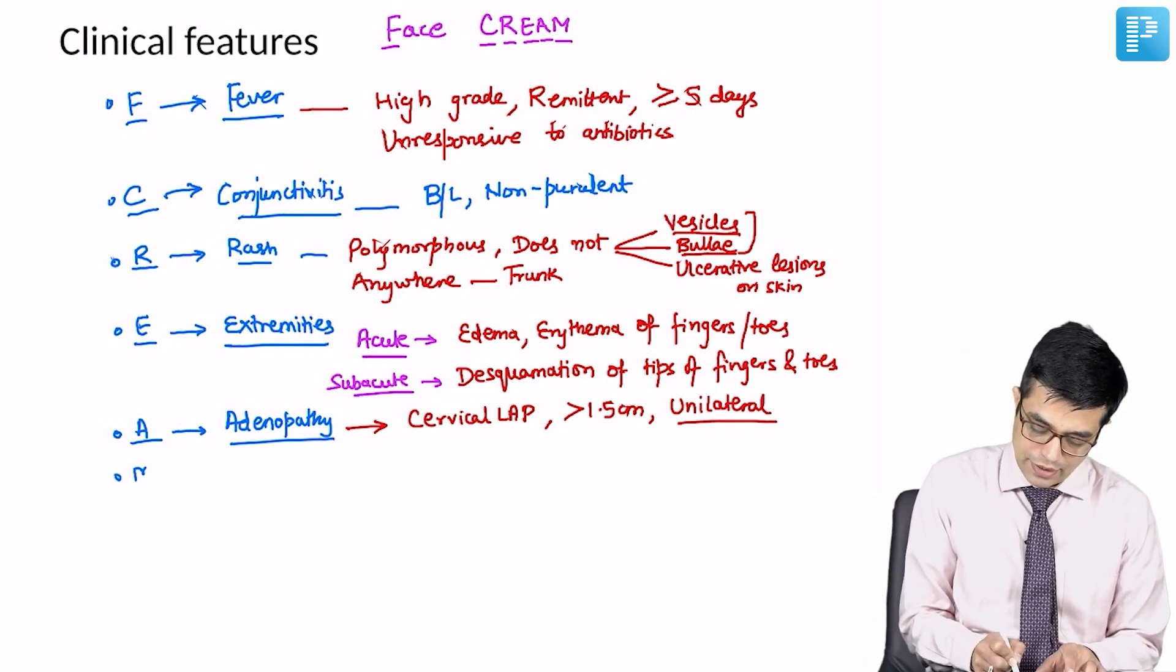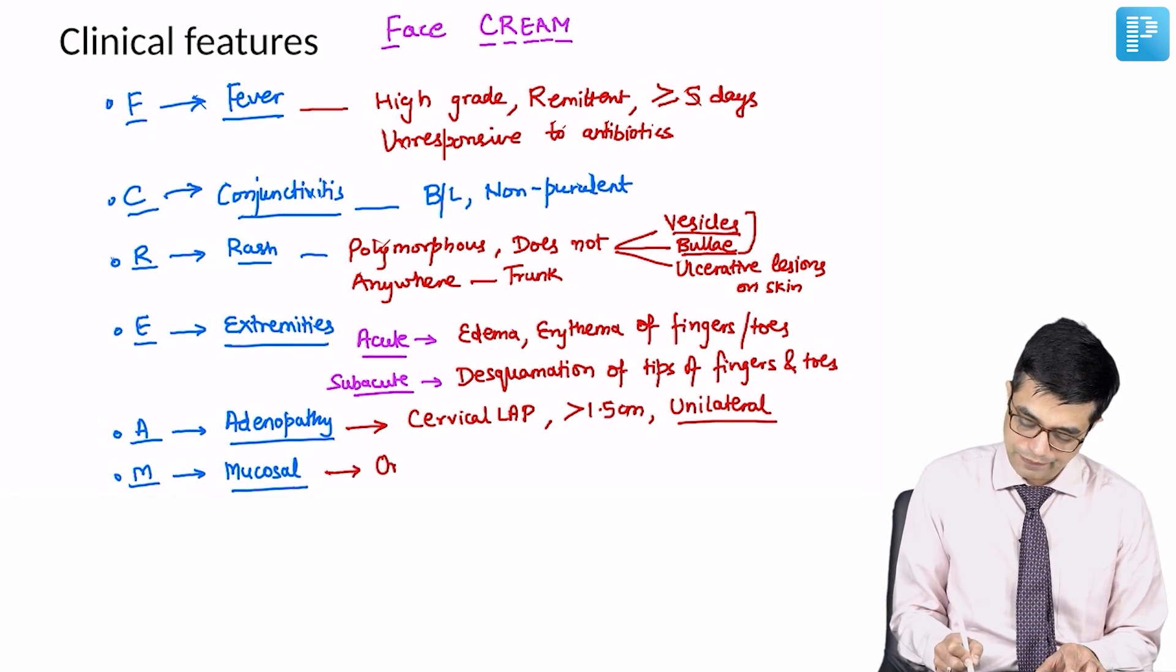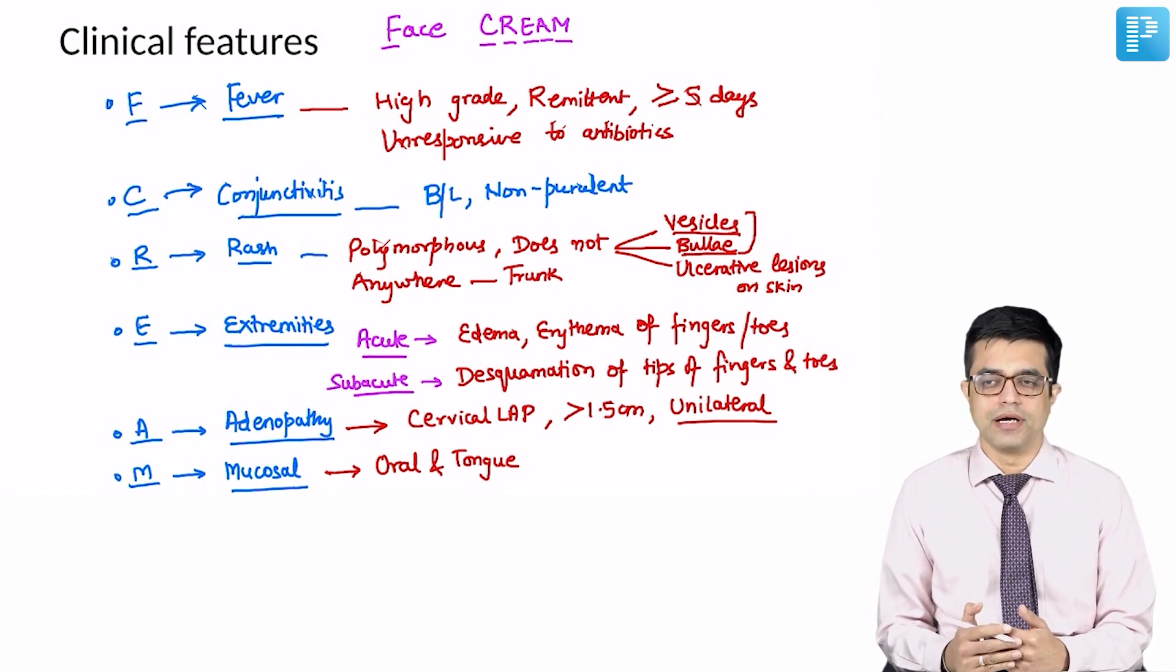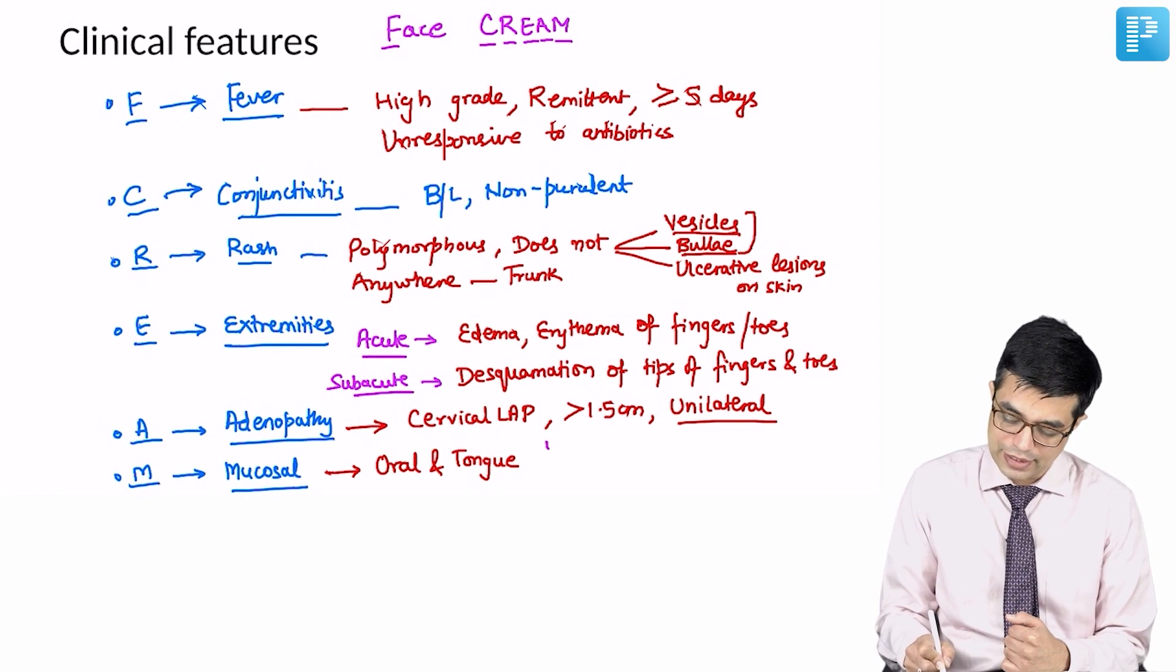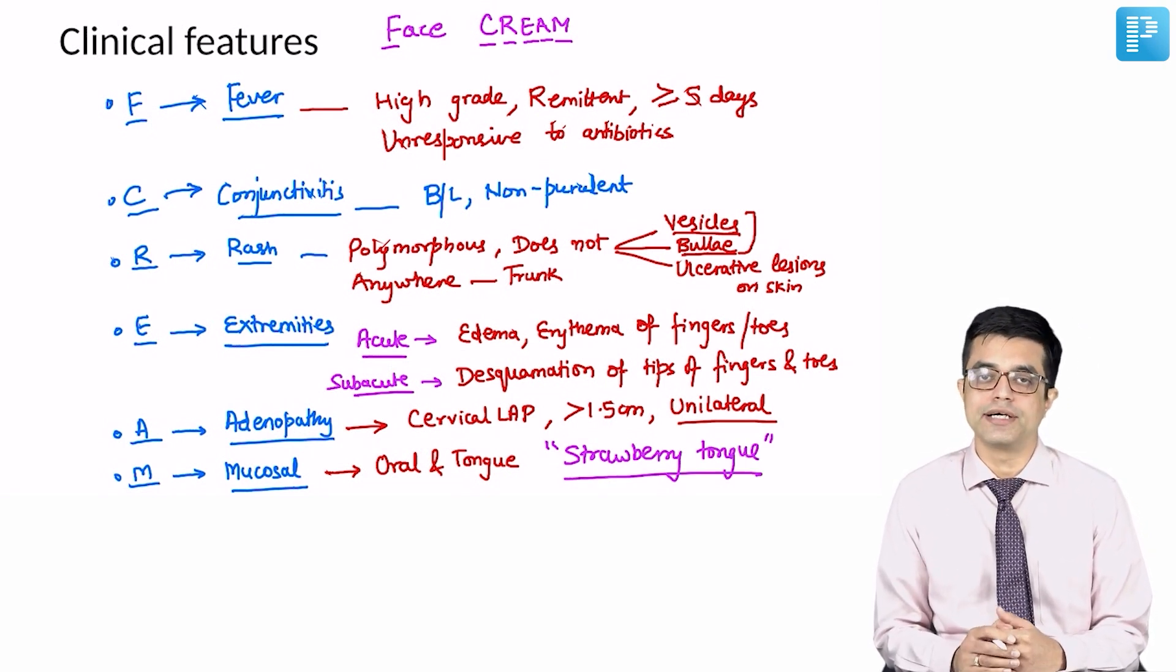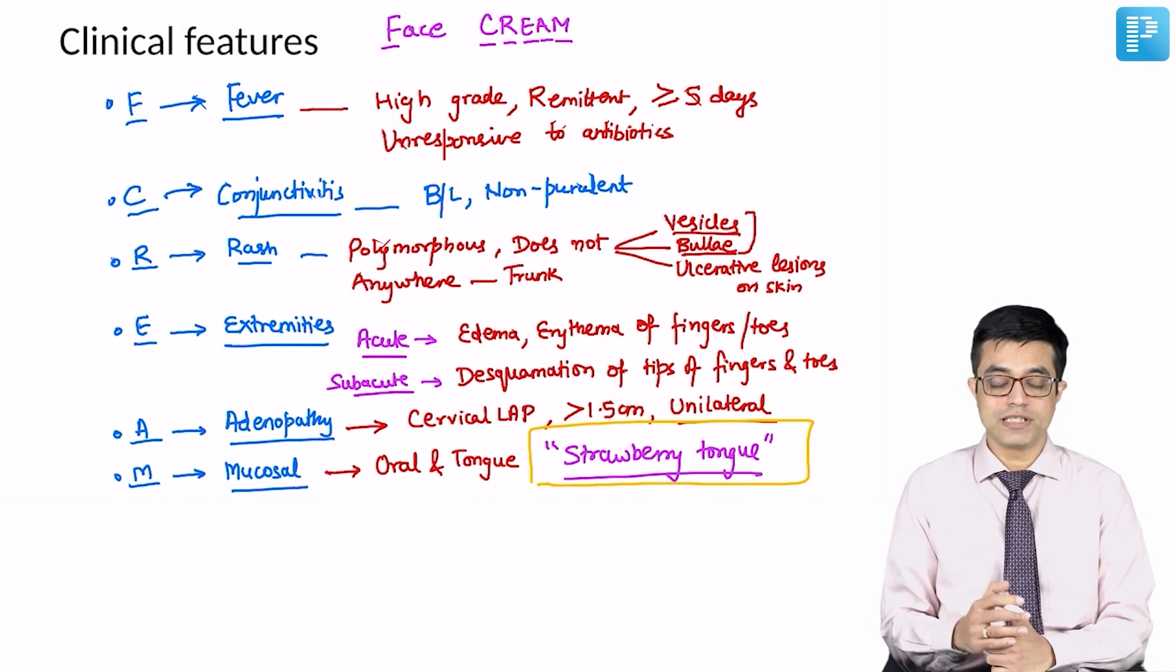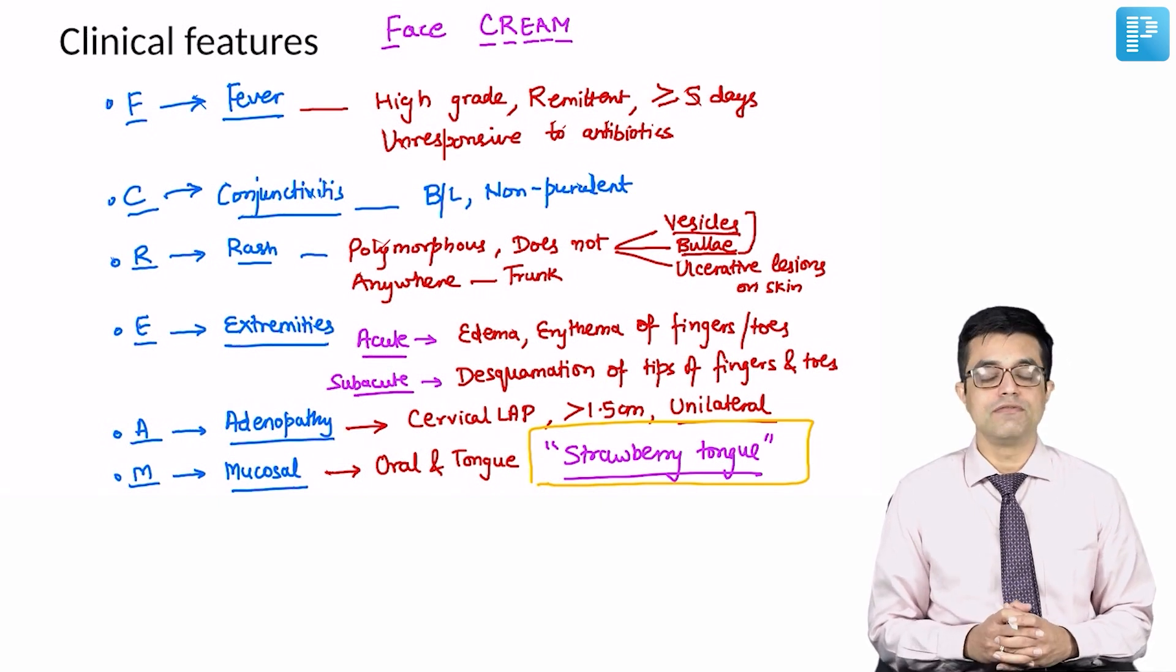Finally, M stands for mucosal changes. Mucosal changes are mainly seen in the oral cavity and tongue region. You may have features of oral mucosal lesions like edema, erythema, cracking of the lips, cracking and fissures in the buccal mucosa, bleeding from the buccal mucosa. But the classic feature and potential MCQ is strawberry tongue. The tongue is swollen, dark pink to red in color, with hypertrophied papillae on the surface. It looks like a strawberry is kept in the mouth. These are the six cardinal features of Kawasaki disease.